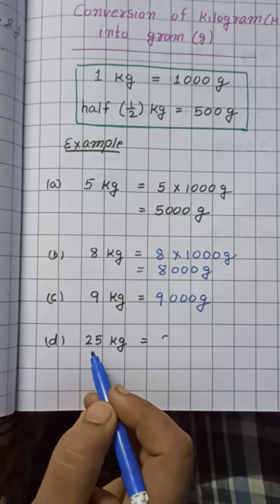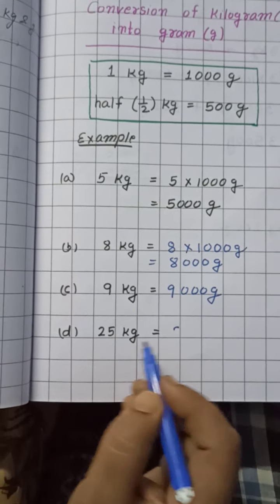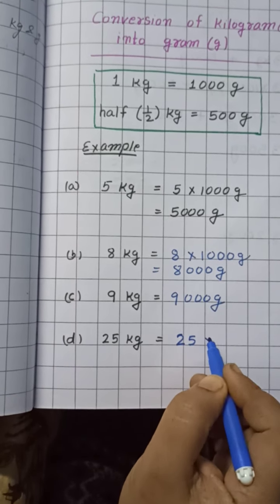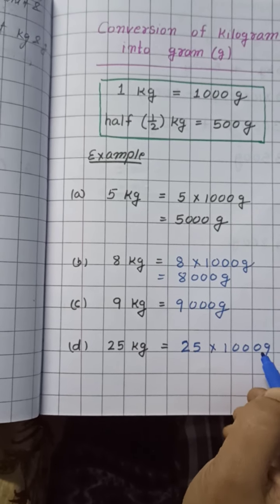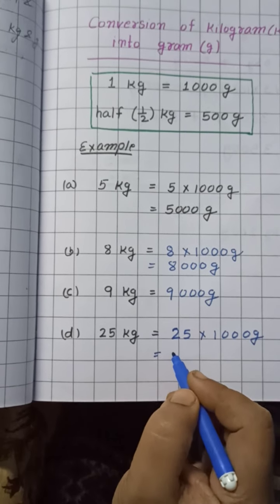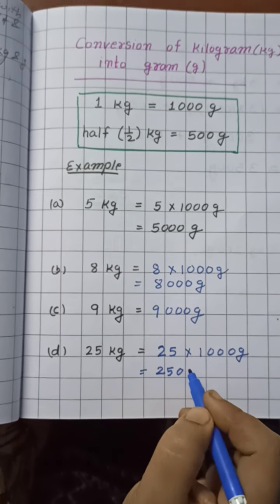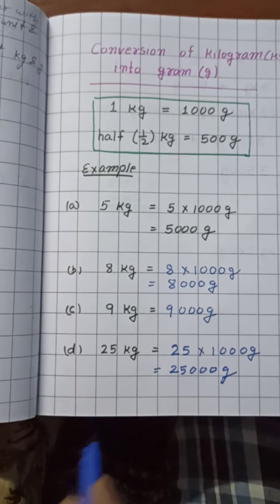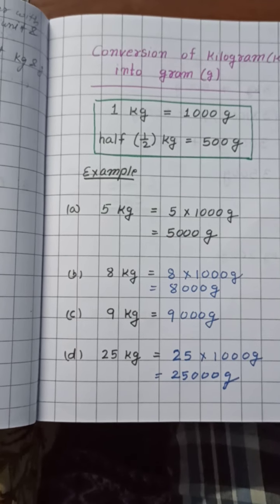Same way, 25 kilogram is equal to how much gram? We write 25 and we multiply by 1000 gram. You can also write the answer directly. We write 25 and we put 1, 0, 2, 0, and 3, 0. So the answer is 25 kilogram is equal to 25,000 gram.